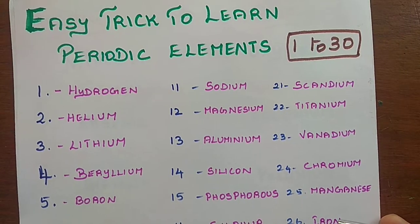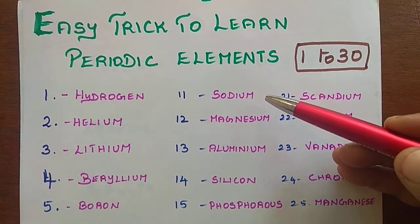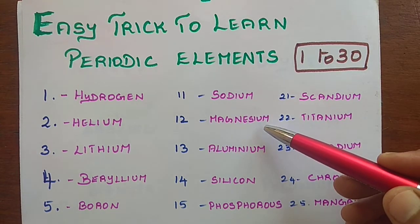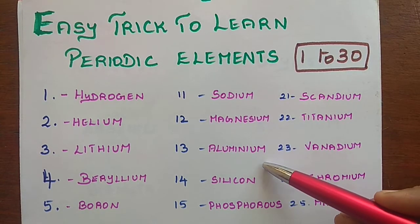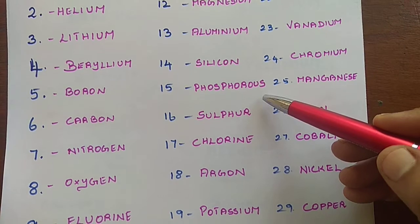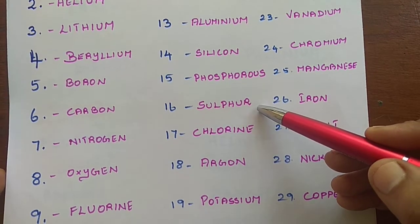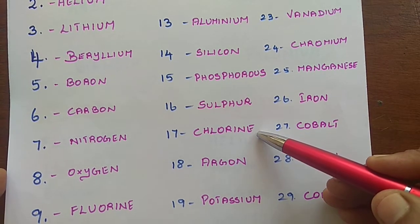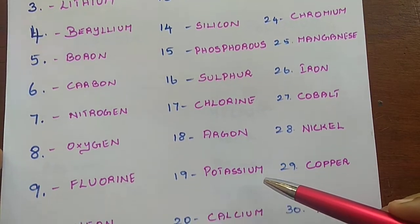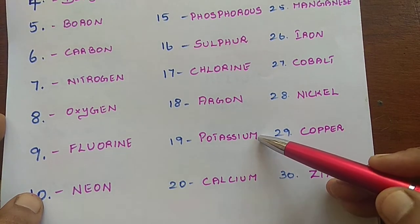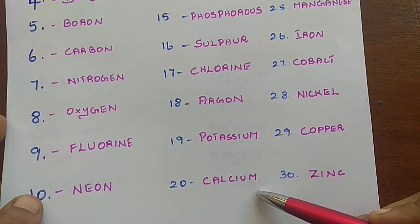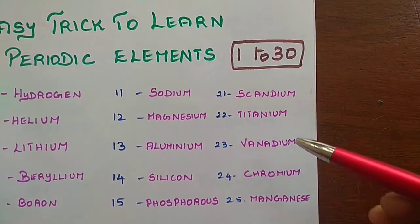Now the next 10 elements: Sodium, Magnesium, Aluminium, Silicon, Phosphorus, Sulfur, Chlorine, Argon, Potassium, Calcium. These are the next 10 elements.